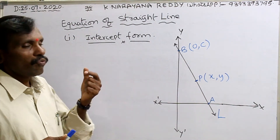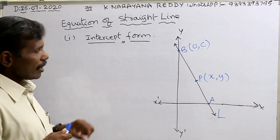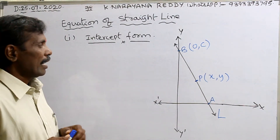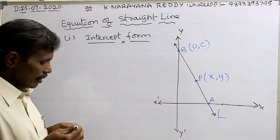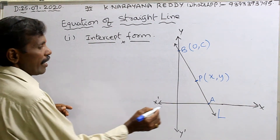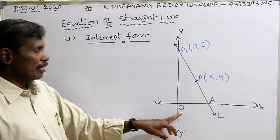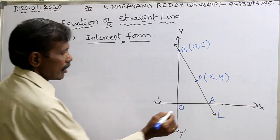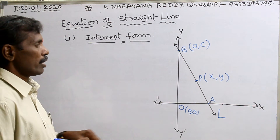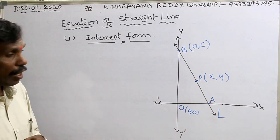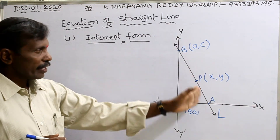First of all, we want to know about what is meant by slope. This is a graph containing x-axis and y-axis. The intersecting point of x-axis and y-axis is called the origin, O, with coordinates (0, 0). Now this graph contains a non-vertical line.